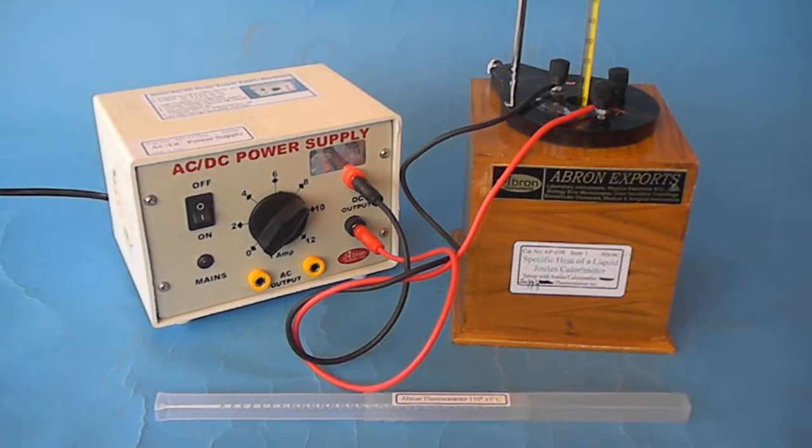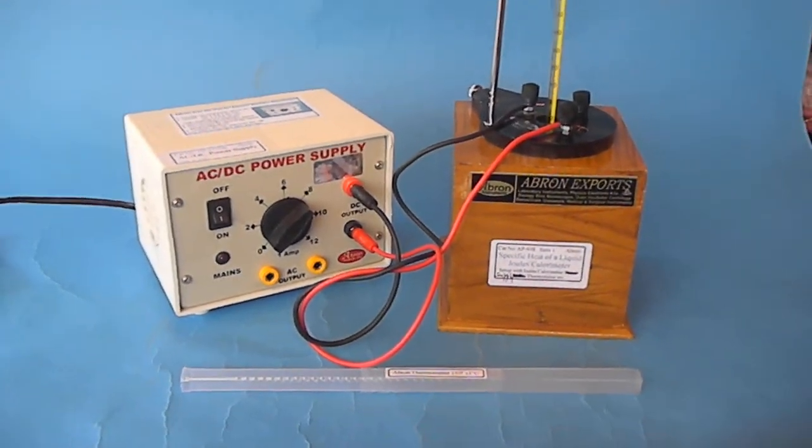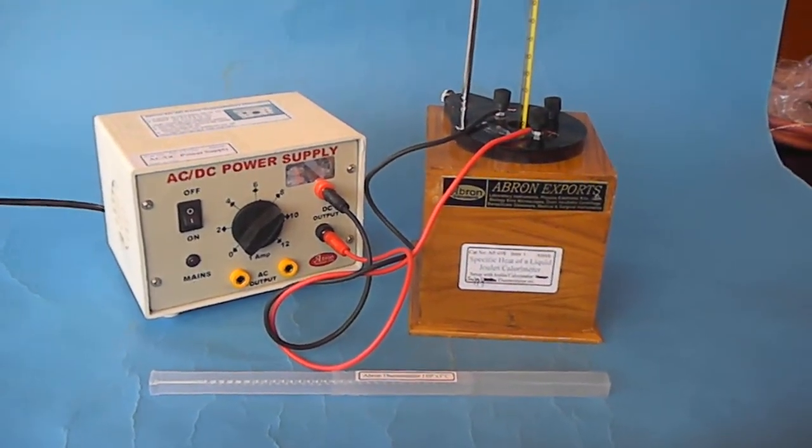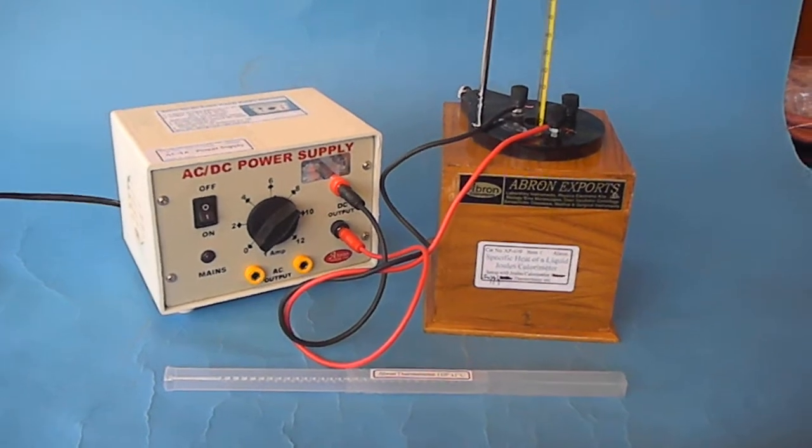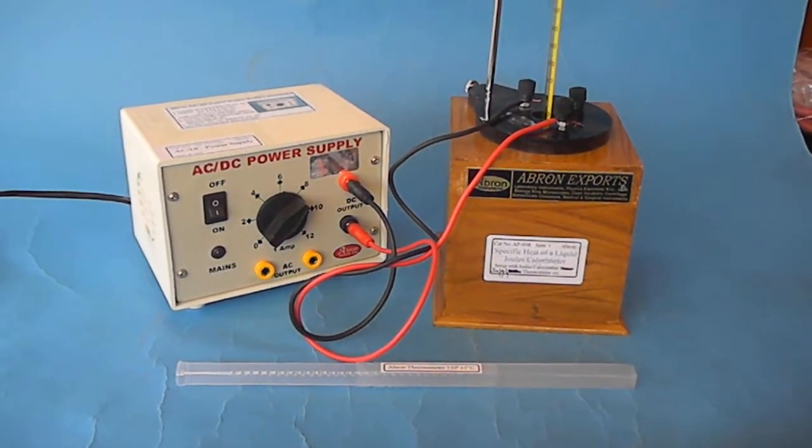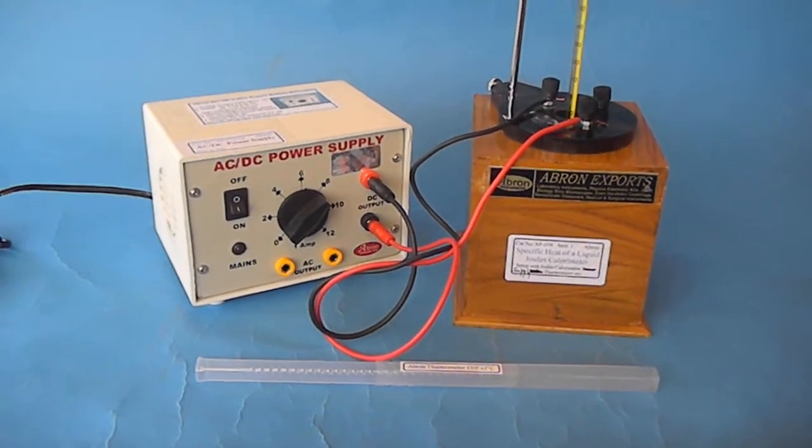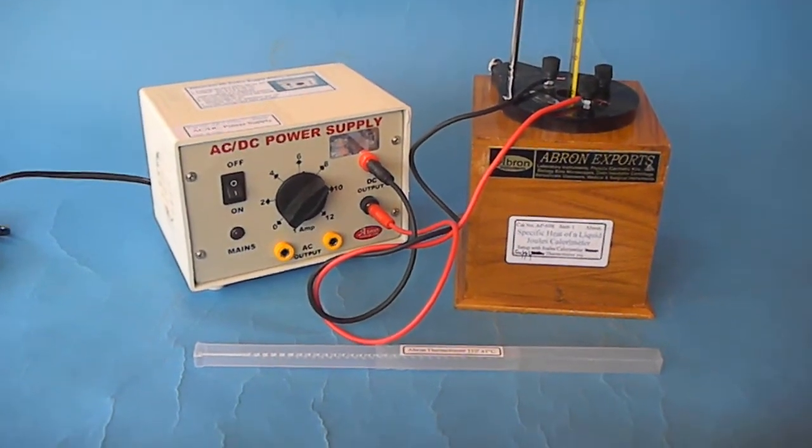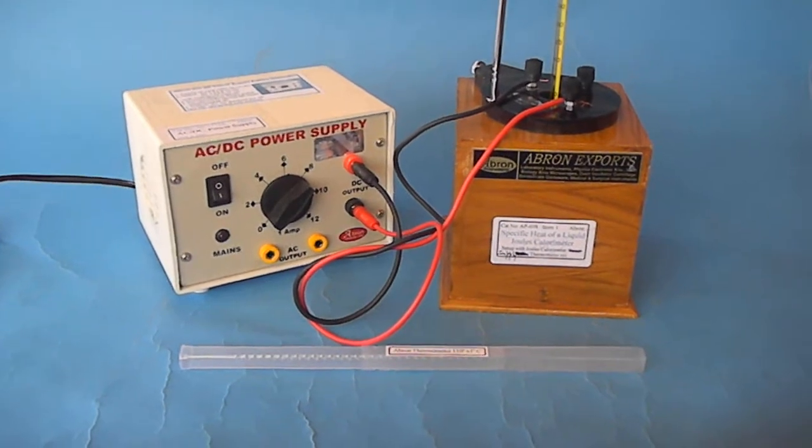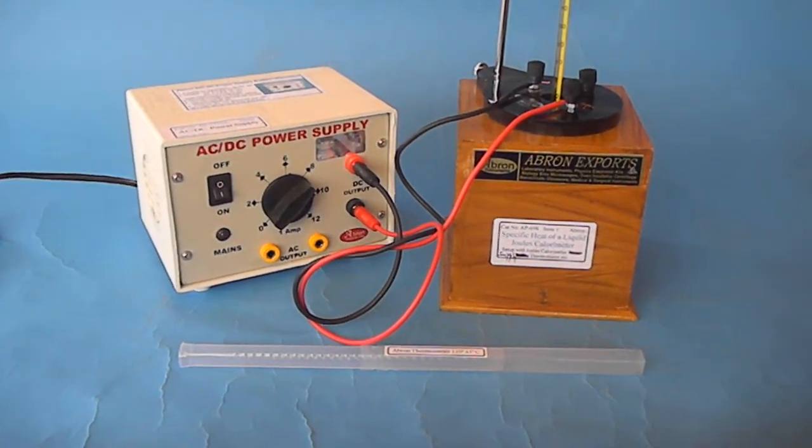When DC current is passed through the coil for a particular time, the current generates heat. With the time measurement, you can determine the specific heat of the liquid using the joules calorimeter.